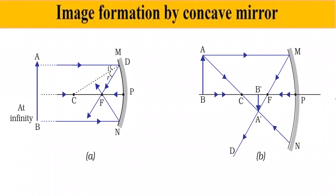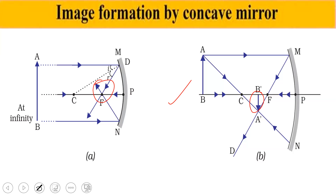Image formation by concave mirror — there are six positions of the object and the corresponding image. First, when the object is placed at infinity, the reflected rays meet at point F on the principal axis. The image is real, inverted, and highly diminished — point size. Second, when the object is placed beyond C, the image forms between C and F. The image is real, inverted, and diminished in size.